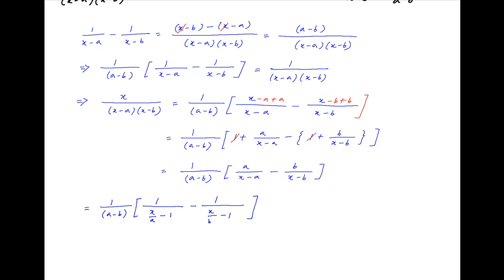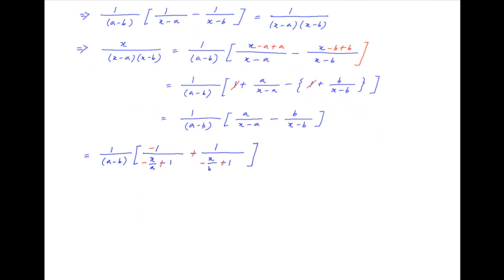Now multiply the numerator and denominator of both terms by minus 1, and therefore this expression is equal to 1 upon (a minus b) times the quantity [1 minus x/b] raised to the power minus 1, minus [1 minus x/a] raised to the power minus 1.